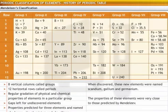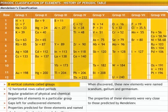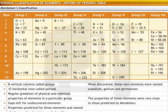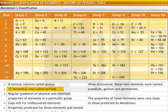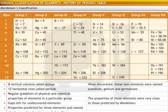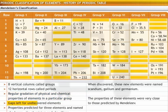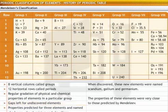Let's look at the features of Mendeleev's periodic table. The table had eight vertical columns called groups and twelve horizontal rows called periods. In every group, a gradation of physical and chemical properties of elements was observed. The table provided gaps for undiscovered elements.